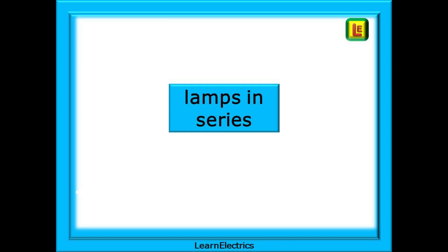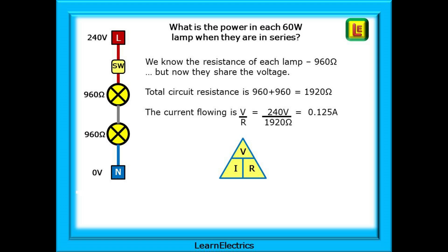Consider lamps in series now. The results are very different. What is the power in each 60 watt lamp when they are in series? From earlier calculations, we know that the resistance of each 60 watt lamp is 960 ohms, but now they share the voltage. They don't have the full 240 volts across each lamp. We must start by adding the resistances together. So 960 plus 960 gives us 1920 ohms as a total circuit resistance. Now we can apply Ohm's law to find the current. Voltage divided by resistance will tell us the current. So 240 volts divided by 1920 ohms is 0.125 amps.